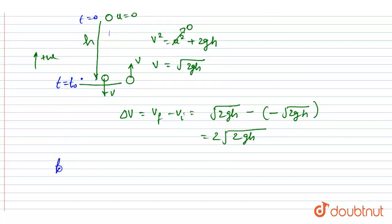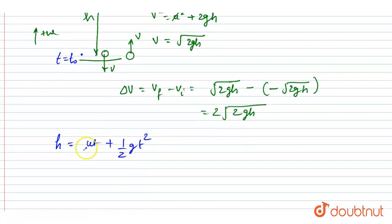So I will write the time to travel distance h is equals to ut plus half gt square. We took downward direction as positive, so u is zero. So you will get t₀ here as √(2h/g).